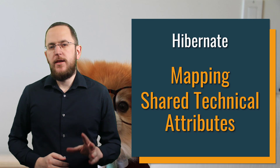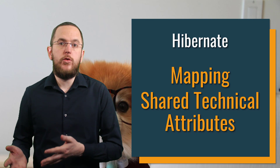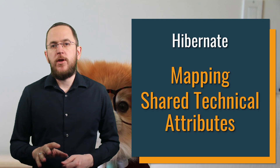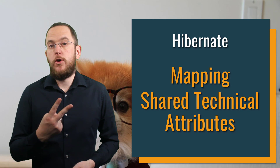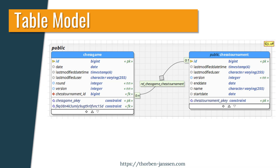Most domain models have a few technical attributes shared by most entity classes. Typical examples are the version attribute and the timestamp or user who performed the last update or persisted an entity. Many developers ask themselves what's the best way to model these attributes. I will explain the two most popular options in this video.